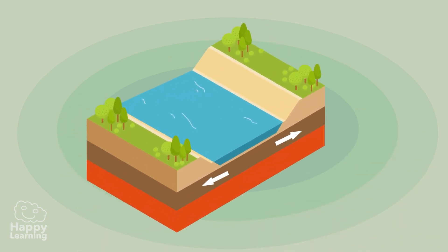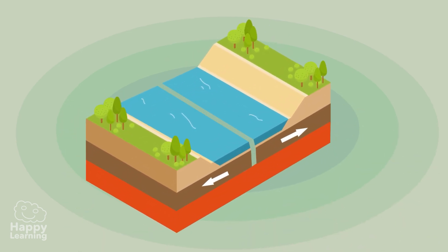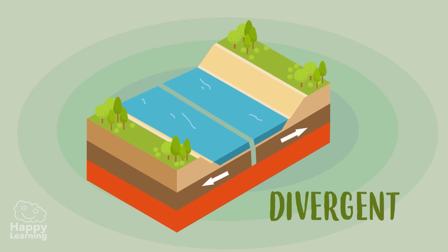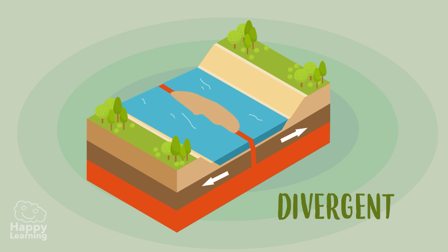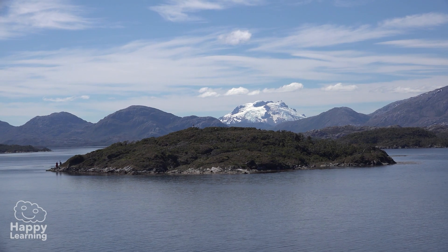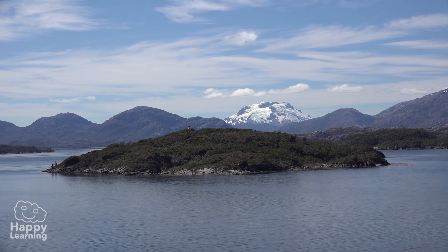When the tectonic plates shift in opposite directions, they are called divergent plate boundaries, and the magma rises towards the surface, cools down and dries, then a new floor is formed, like these islands you can see here.